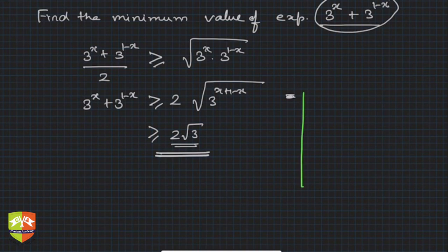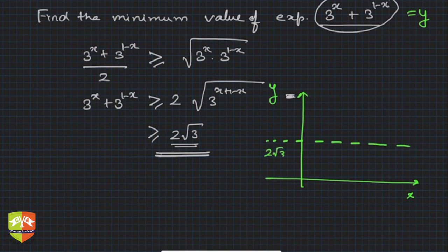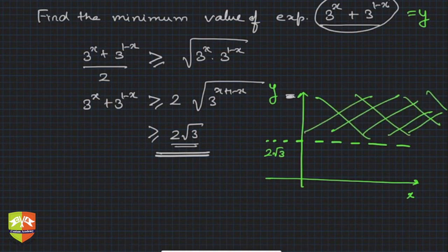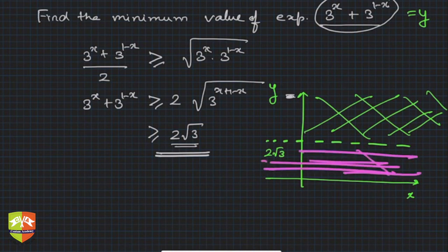How does this help? When you plot this — let's say y = 3^x + 3^(1−x) — the value 2√3 is the minimum. The graph will always be in the region y ≥ 2√3; it will never come below that. So 3^x + 3^(1−x) will always be more than or equal to 2√3.